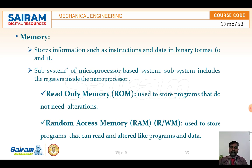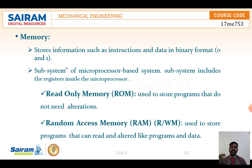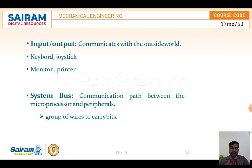Memory is used to store information in the form of binary. There are two types of memory. Read Only Memory (ROM) is used to store programs that do not need any alterations — it stores data as-is. Random Access Memory (RAM) is where we can store programs that can be read, edited, and altered. These are the two important memory areas.